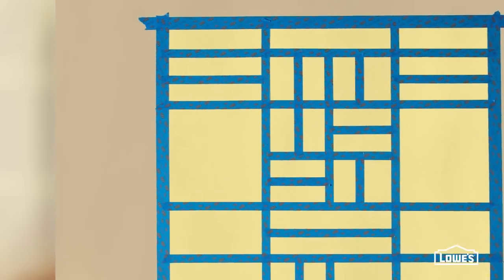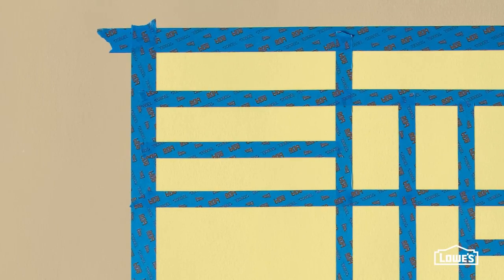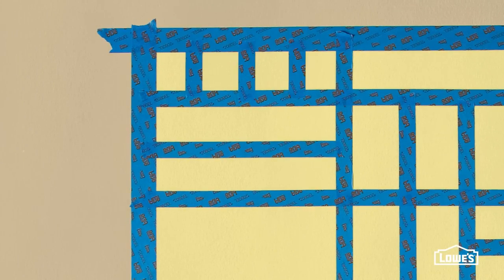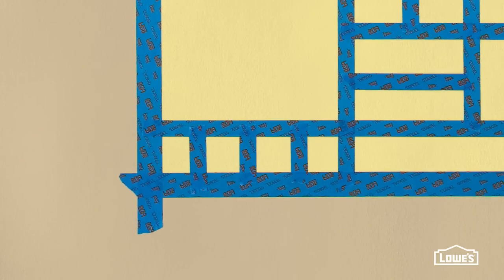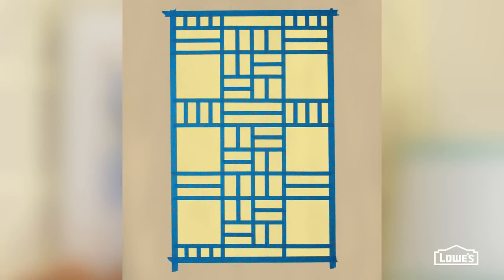Now you'll finish the outer columns. Starting with the left side, add three short verticals in the top cell, in this cell in the middle, and in the bottom cell. Then repeat the same pattern in the right-hand column.